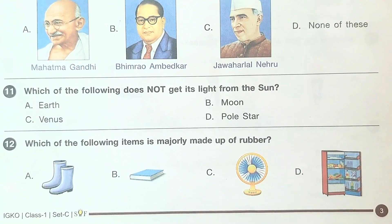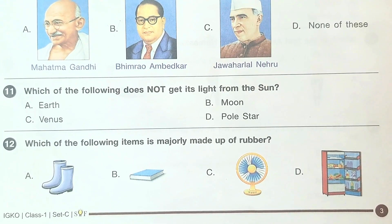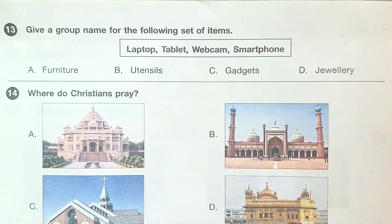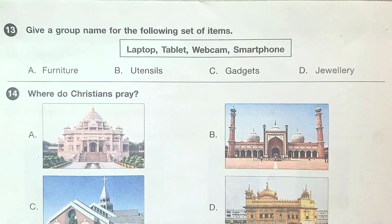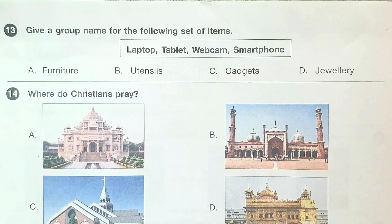Question number 11: which of the following does not get its light from the sun? The answer is option D, Polestar. Question number 12: which of the following items is majorly made up of rubber? The answer is option A. Thirteenth question: give a group name for the following set of items — Laptop, Tablet, Webcam, Smartphone. The answer is option C, Gadgets.